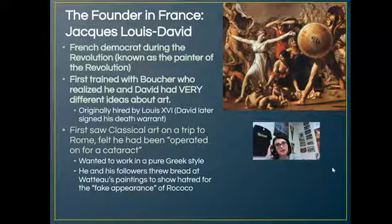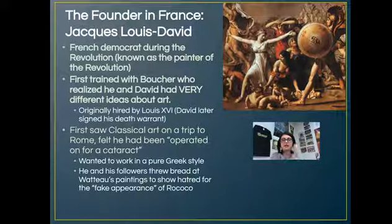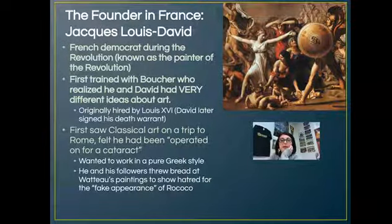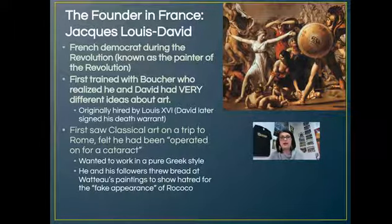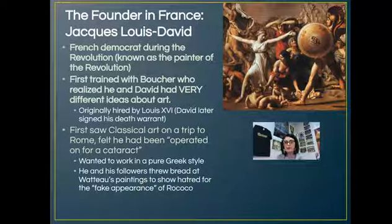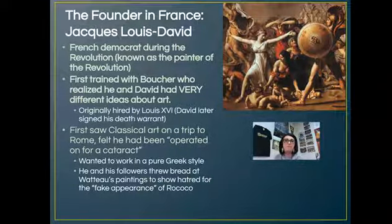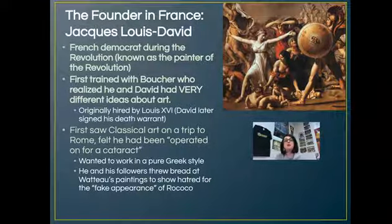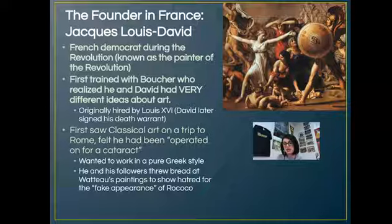Now we turn to Jacques-Louis David, another French figure involved in both the neoclassical movement and the Revolution. If there's one thing to say about David, it's that he was an opportunist — desperately trying to serve whoever wouldn't get him killed at the time. He was actually trained by Rococo painter Boucher — the one who did 'Girl Reclining' — yet his ideas were completely different from Boucher's. He would pursue whatever got him the most attention and kept him alive. Ironically, he started his career working for Louis XVI.